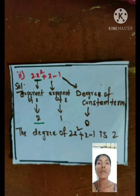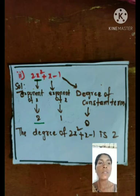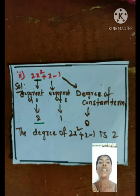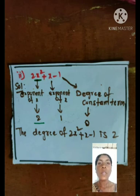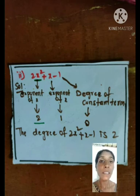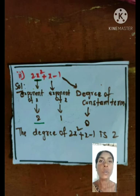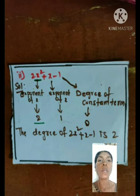Solving the second problem: 2x² + x − 1. This algebraic expression has 3 unlike terms, so it is a trinomial. The highest exponent in this expression is 2. So the Degree of 2x² + x − 1 is 2.